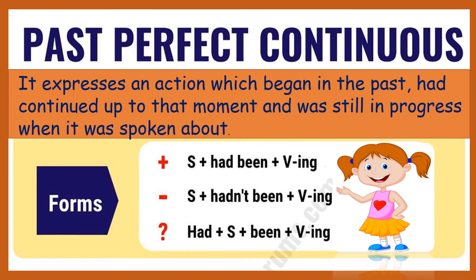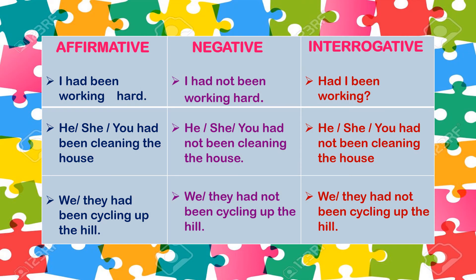Past perfect continuous tense expresses an action which began in the past, had continued up to that moment, and was still in progress when spoken about. The form is: subject + had + been + the '-ing' form of verb. In affirmative, we use 'had + been + ing form.' In negative, 'had + not + been + ing form.' And in interrogative, 'had' is placed before the pronoun.